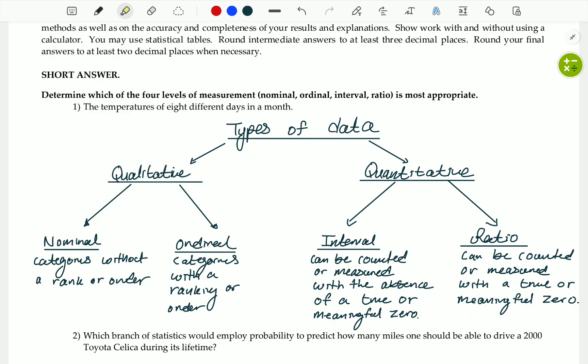So, we have two types of data. We have qualitative data and quantitative data. And within each type of data, we have two levels of measurement. Qualitative is nominal and ordinal. Quantitative is interval and ratio.